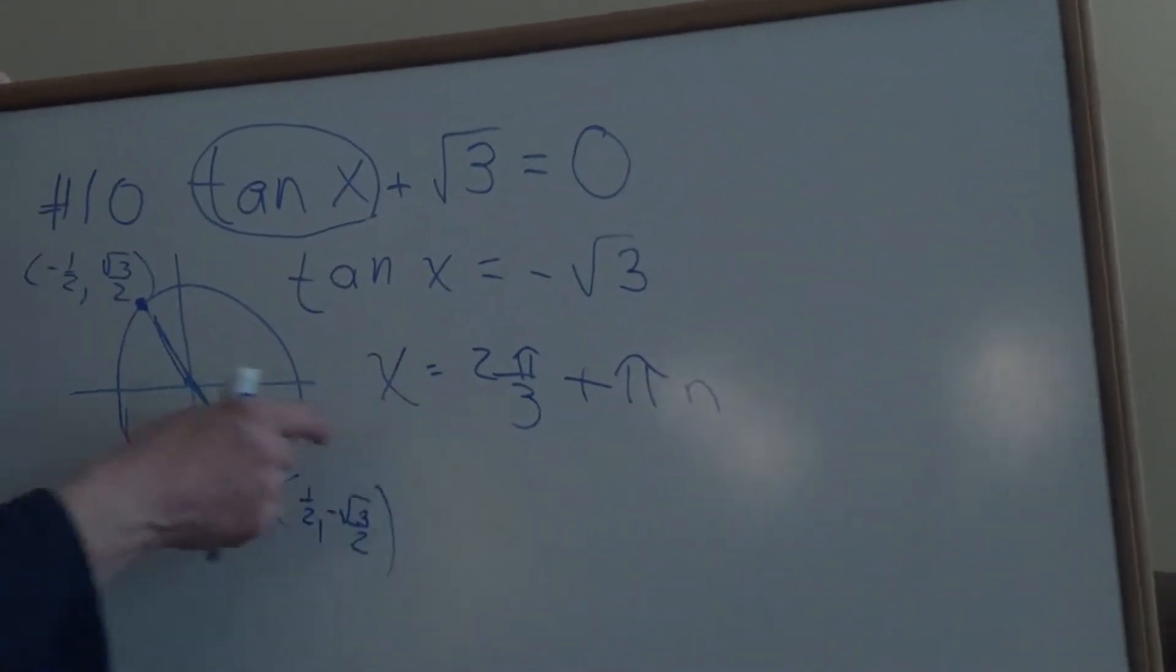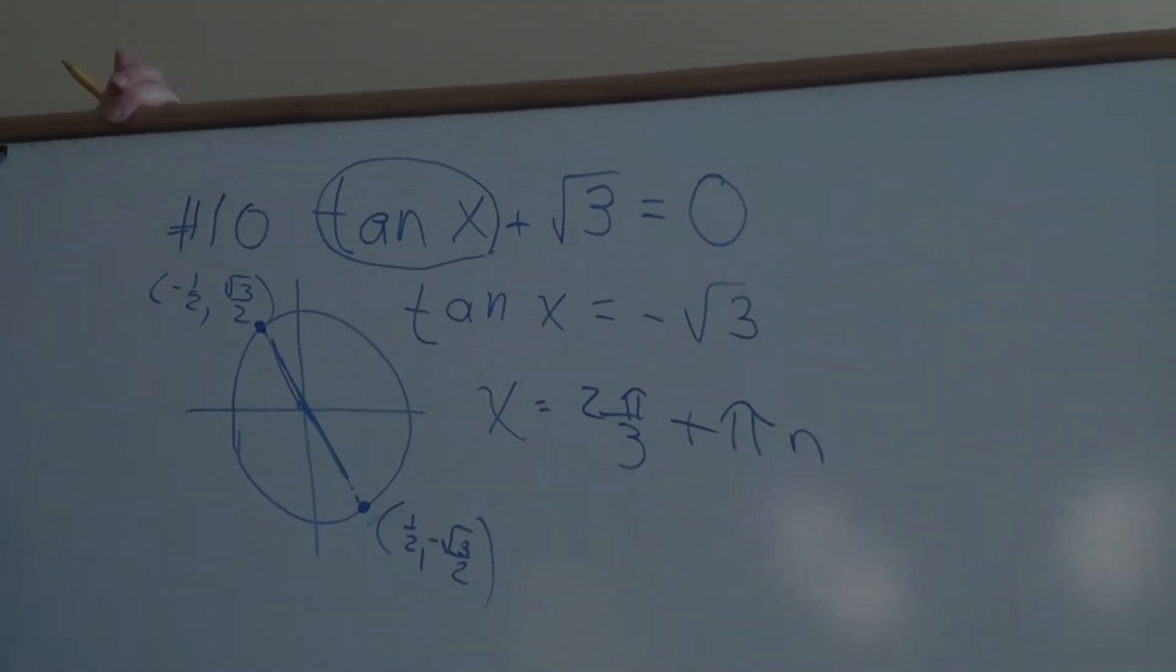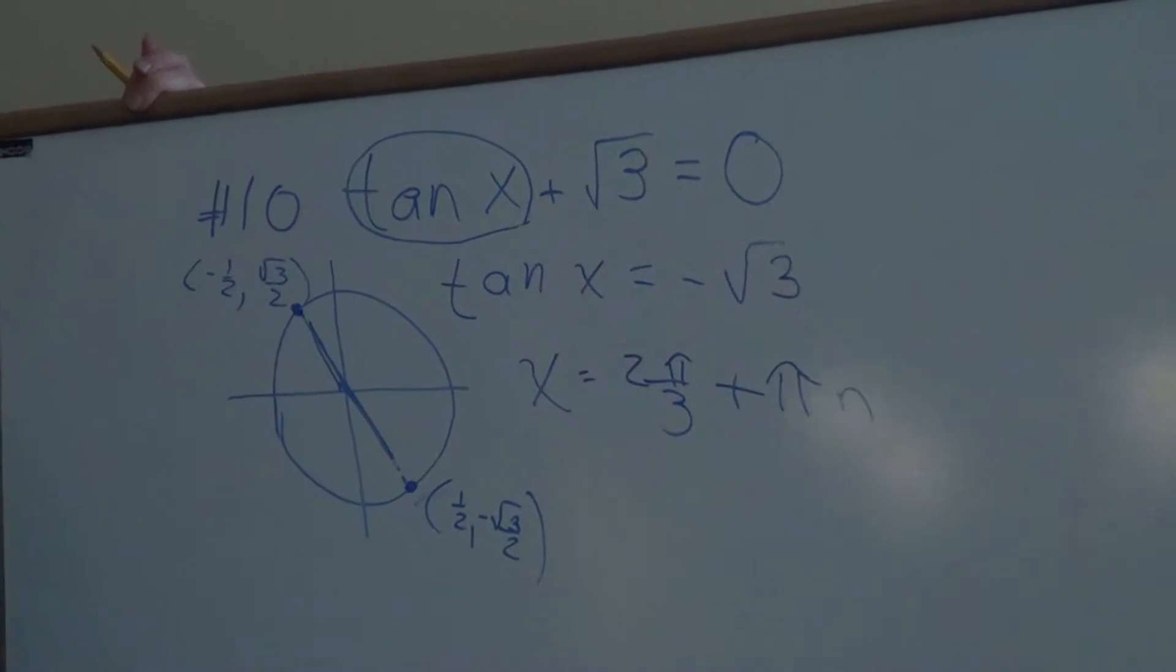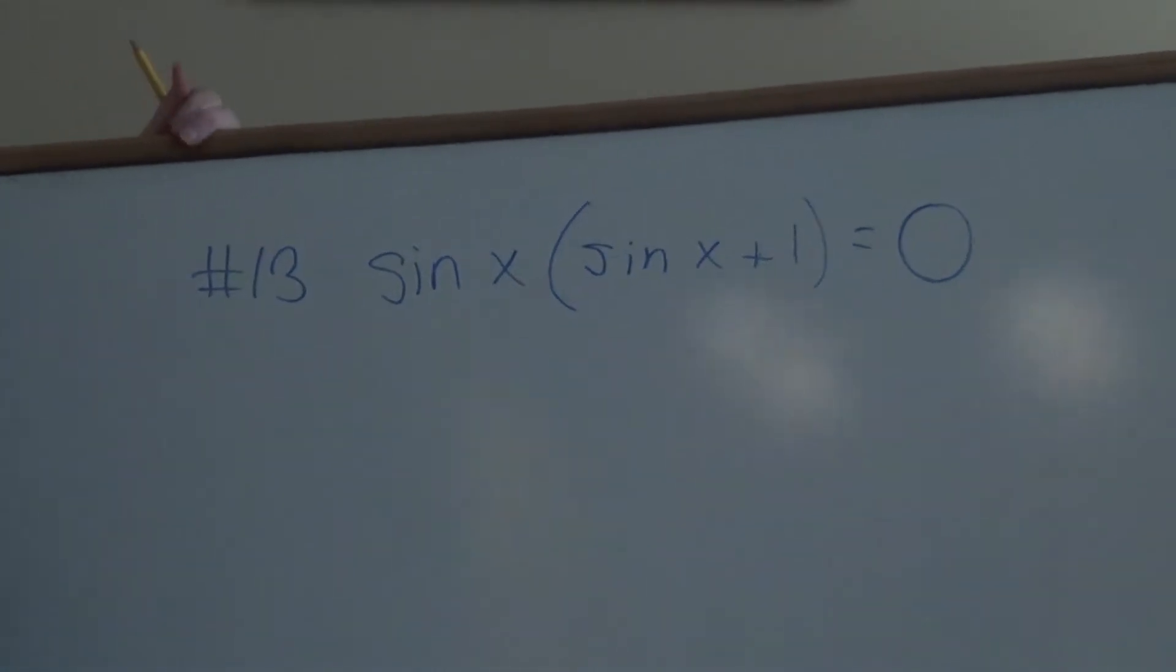Is that what you got? All right. Confusing. No. It's clear as can be. All right. I need the next one read. You ready to read the next one? What number was this one? Number 13. All right go ahead. Sign x times sign x plus 1 equals 0.